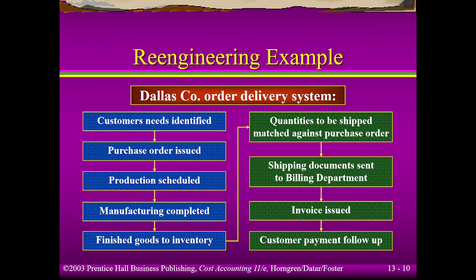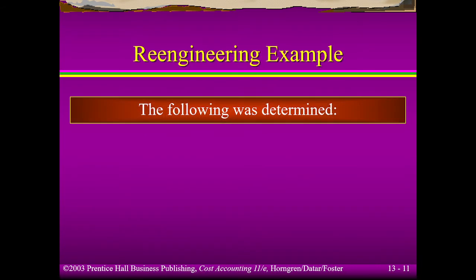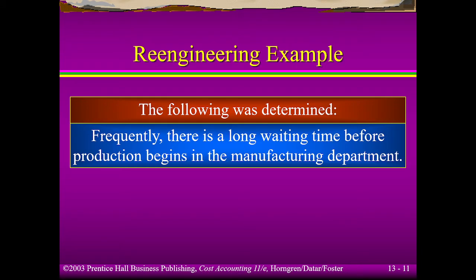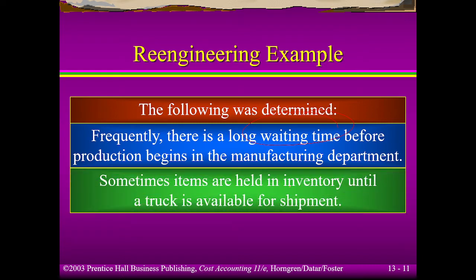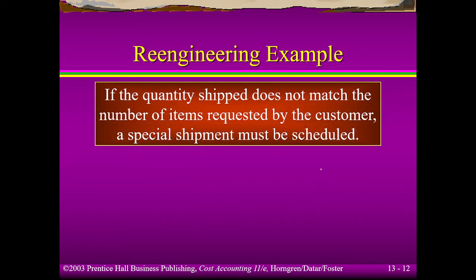You are given a sample here. What are the processes they follow in their order delivery system? The non-value-adding activities identified include waiting time. We need to minimize this. Also, sometimes items are held in inventory until a truck is available for shipment — that's also waiting time before you can deliver. And the quantity delivered doesn't match what had been requested, leading to additional delivery costs.